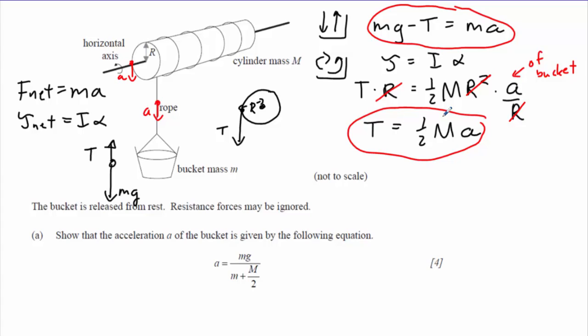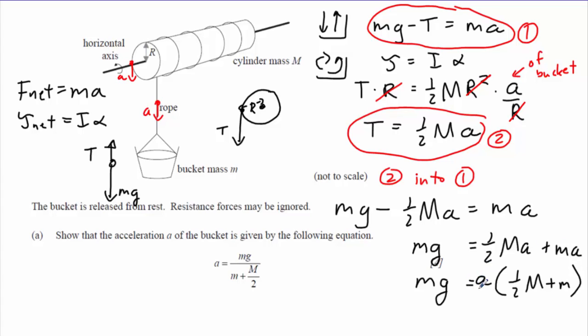So now we should be able to combine this equation and this equation, eliminate the tension, and solve for the acceleration. So I'm going to call this equation 2 and this equation 1, and I'm going to plug equation 2 into equation 1. So equation 1 will become mg minus the tension, one-half Ma, capital Ma, equals little m times A. I'll bring the A's to one side of the equation, common factor out the A. So solving for that acceleration, we get this expression here.